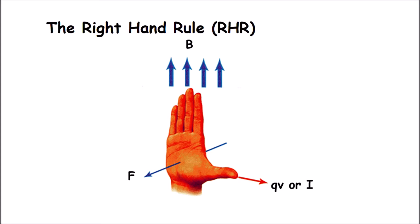Now let's take a look at how we actually apply that to some example problems. I'm going to show a video that illustrates the three parts of the right-hand rule, how we make a diagram, and how we find the direction of force based on the direction of the magnetic field and the direction of motion of a charged particle.